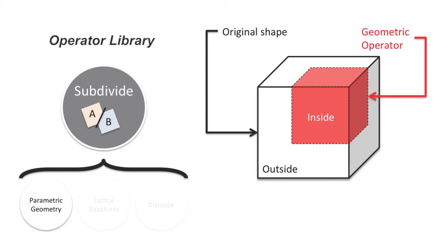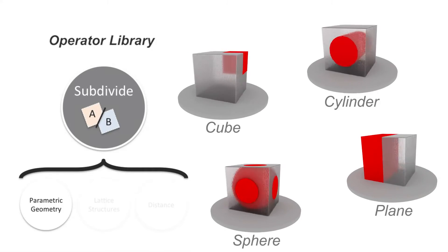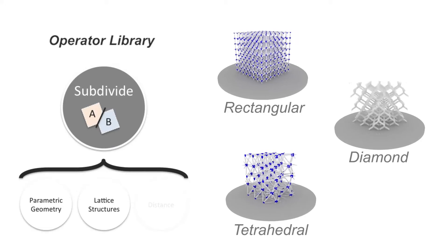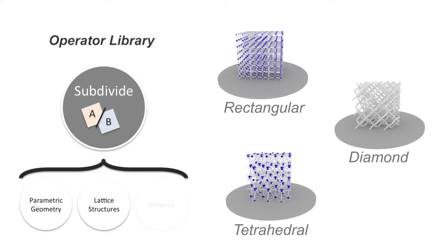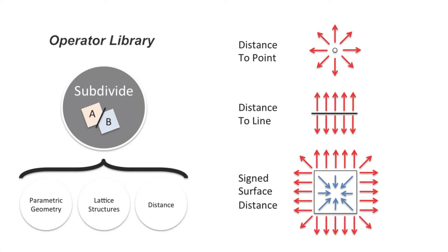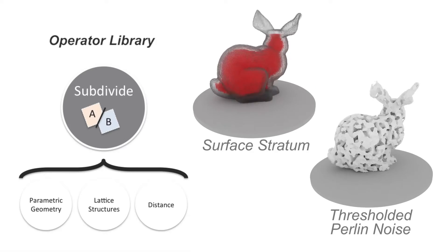Our subdivision operators include simple geometric operations such as planar division or shape separation. Any geometric primitive can be used, including other meshes. Another kind of subdivision consists of lattices that separate the space into smaller cells, optionally separating vertices and edges from the cell content. Our last category of subdivision operators is based on thresholding, using for example the distance from a point, from a polyline, from a shape surface, or even using arbitrary user-defined scalar fields.